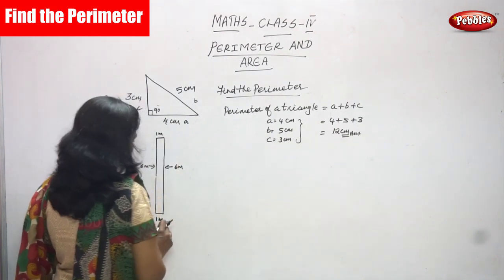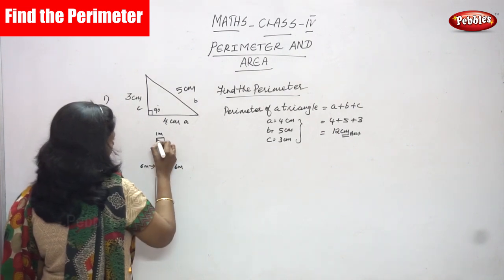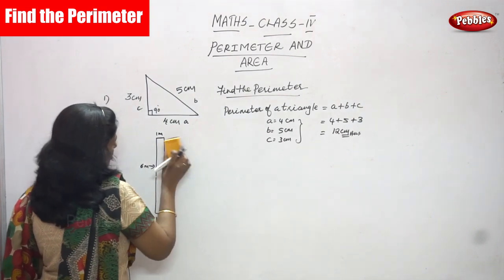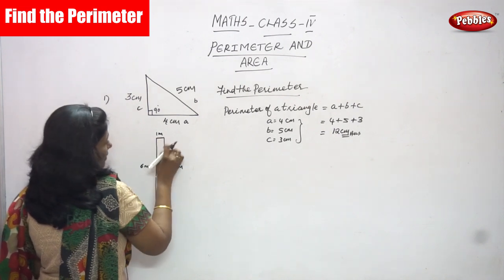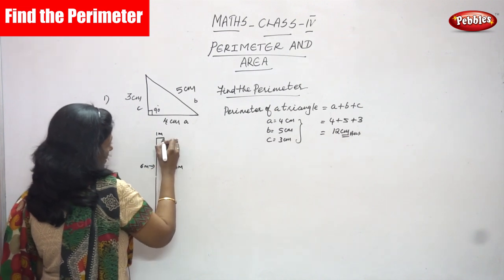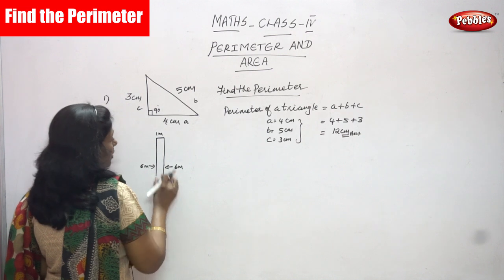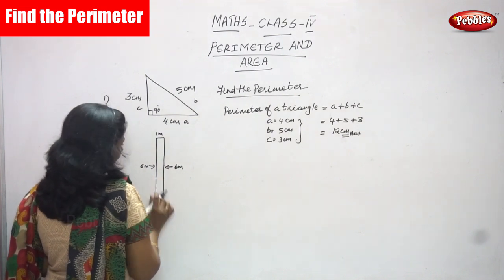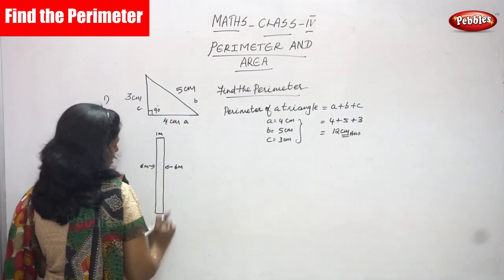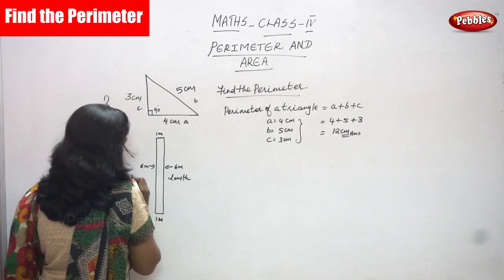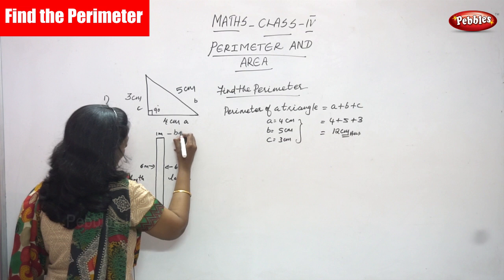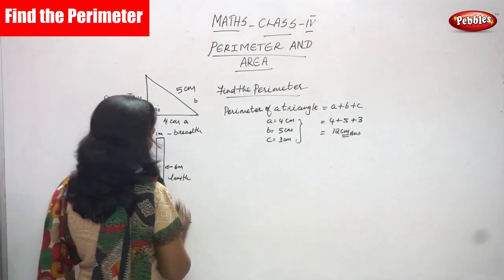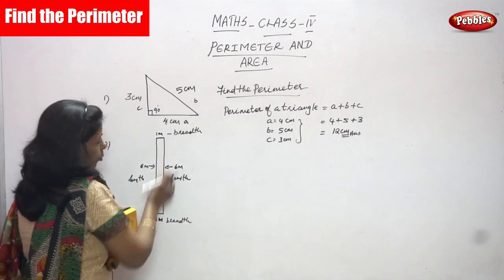Next, the shape is a rectangle. It is drawn in a vertical direction, but it is still a rectangle. The two longer sides are the length, equal to six meters, and the shorter sides are the breadth, equal to one meter.